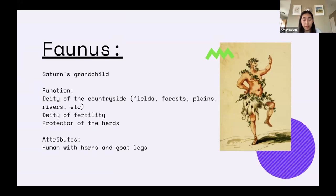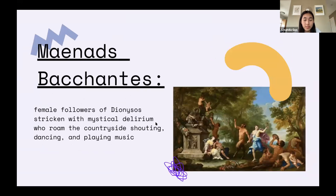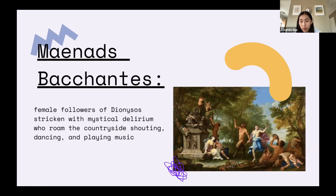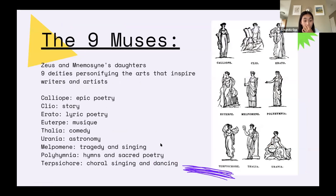Then we're going to talk about the Maenads, or Bacchants. They are female followers of Dionysus, stricken by mystical delirium, who roam the countryside shouting, dancing, and playing music. Basically, since Dionysus is always drinking wine — which is why we can say he likes to party — the Maenads are the women who follow him around.